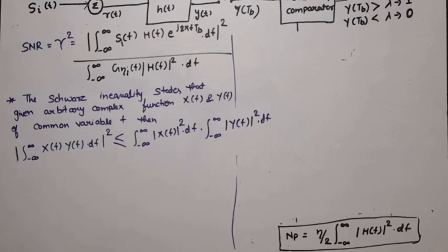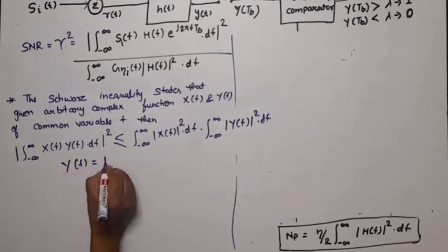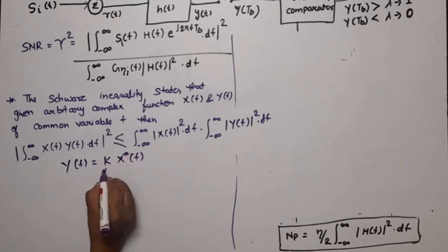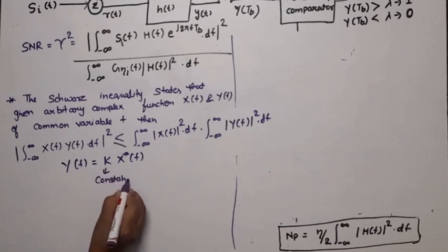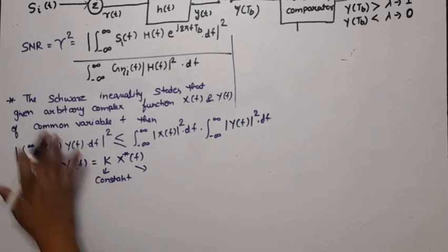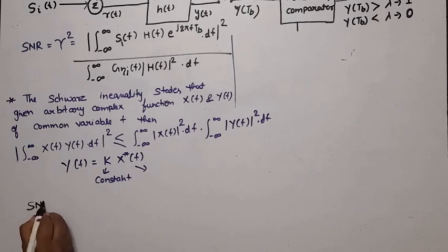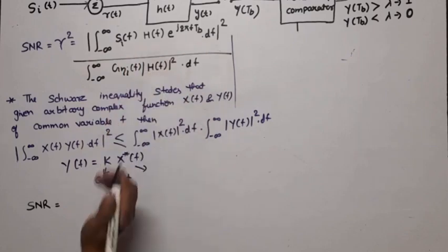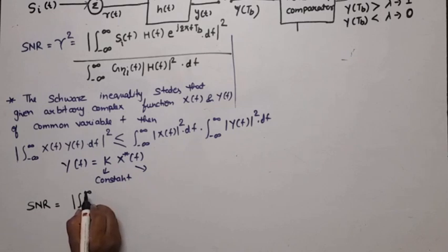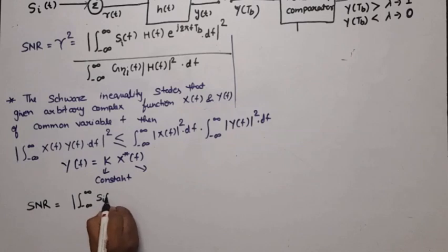By using Schwarz's inequality, we identify x(f) = S_i(f) and y(f) = H(f) · e^(j2πfT_b) for this formula. Applying the inequality, the numerator | integral of S_i(f) · H(f) · e^(j2πfT_b) df |² ≤ [ integral |S_i(f)|² df ] · [ integral |H(f) · e^(j2πfT_b)|² df ].